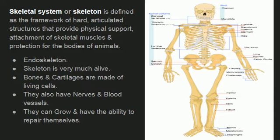Doosre vertebrates ki tara insaan ka skeleton bhi body ke andar hai, isi liye hum isko endoskeleton bolte hai. Bones and cartilages are made of living cells aur in mein nerves and blood vessels bhi hoti hai. They grow and have the ability to repair themselves.